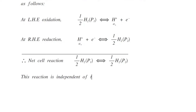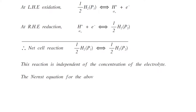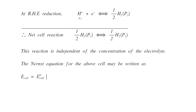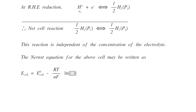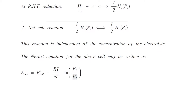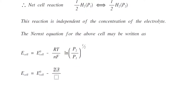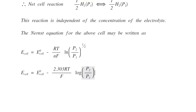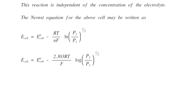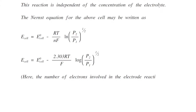This reaction is independent of the concentration of the electrolyte. The Nernst equation for the above cell may be written as: E_cell equals E⁰ of the cell minus RT/nF ln of (P2/P1)^(1/2). Or, E_cell equals E⁰ of the cell minus 2.303RT/F log of (P2/P1)^(1/2). Here, the number of electrons involved in the electrode reaction is 1, therefore we substitute the value of n as 1.